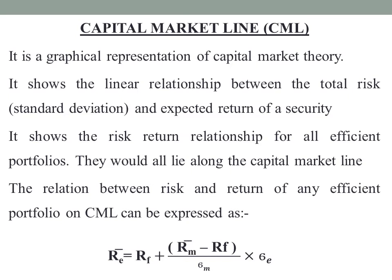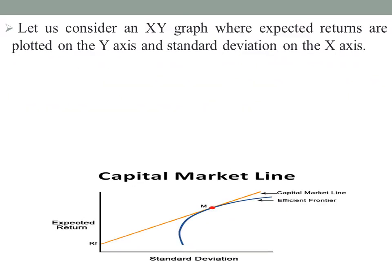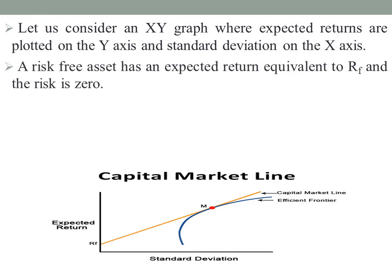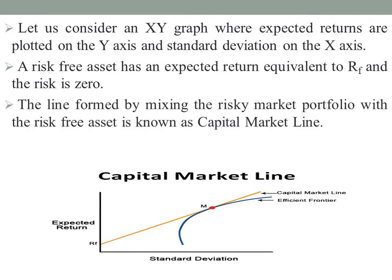CML represents the risk-free rate of return plus the efficient portfolio's risk premium. Let us consider an XY graph where the expected returns are plotted on the Y-axis and the standard deviation on the X-axis. A risk-free asset has an expected return equivalent to rf and the risk is 0. The line formed by mixing the risky market portfolio with the risk-free asset is known as the Capital Market Line.